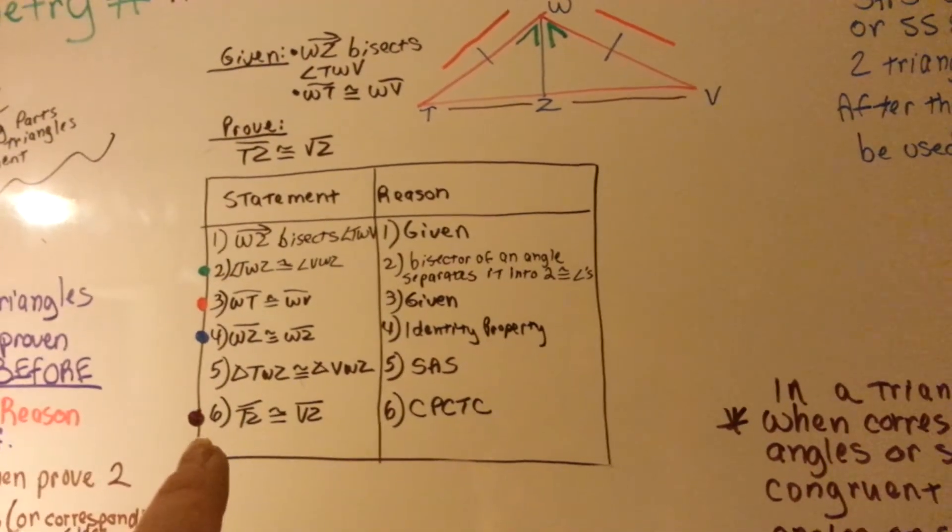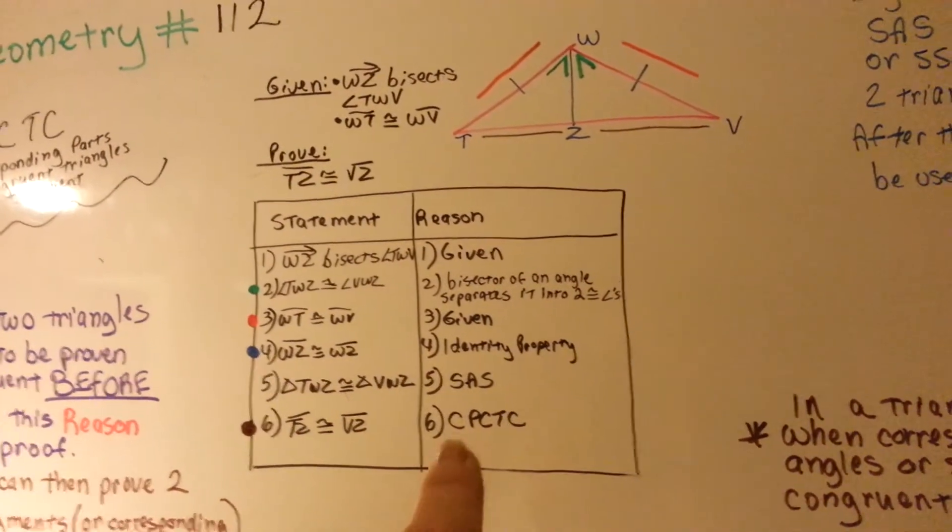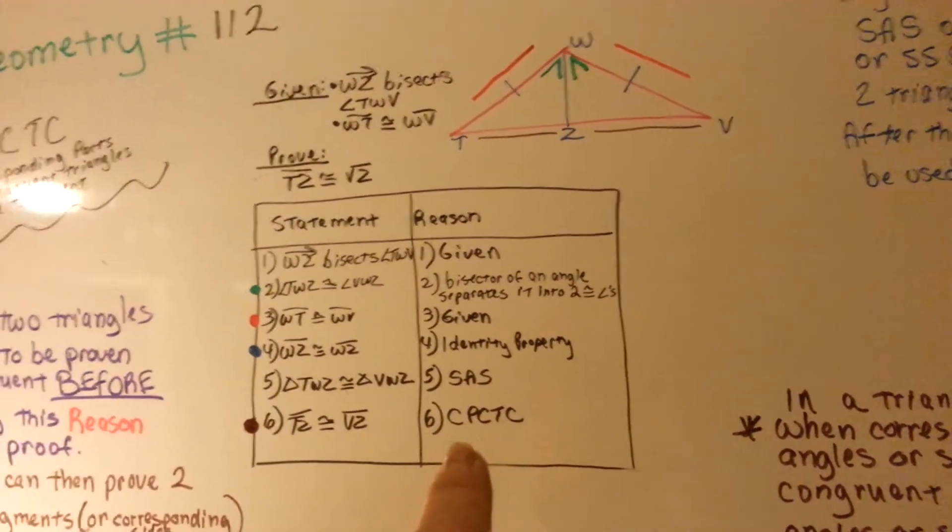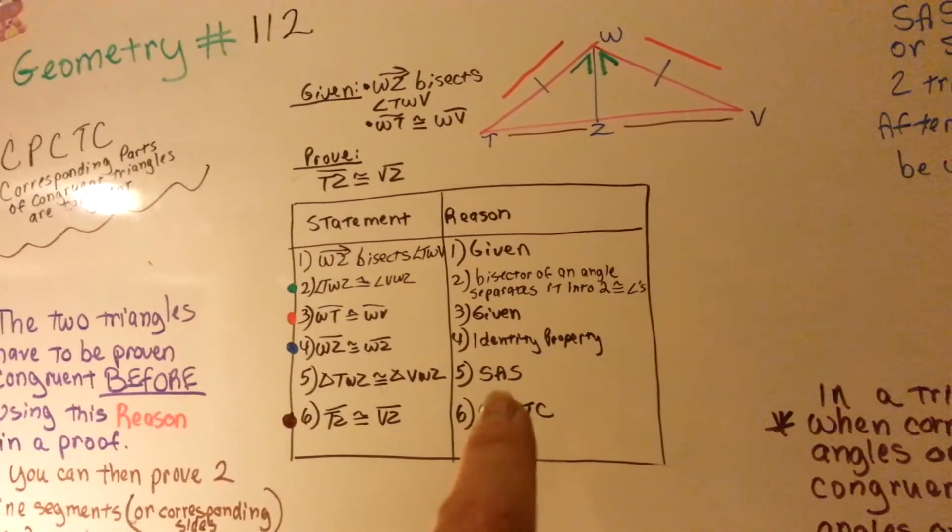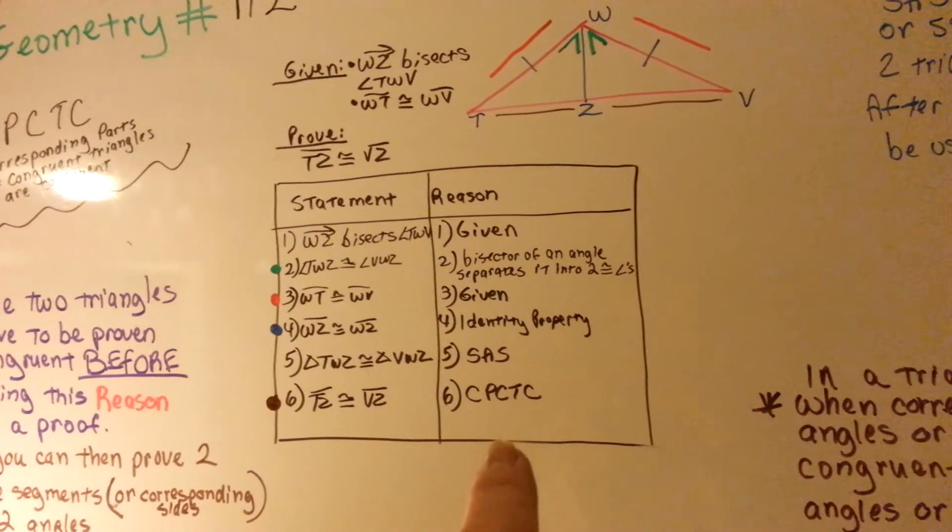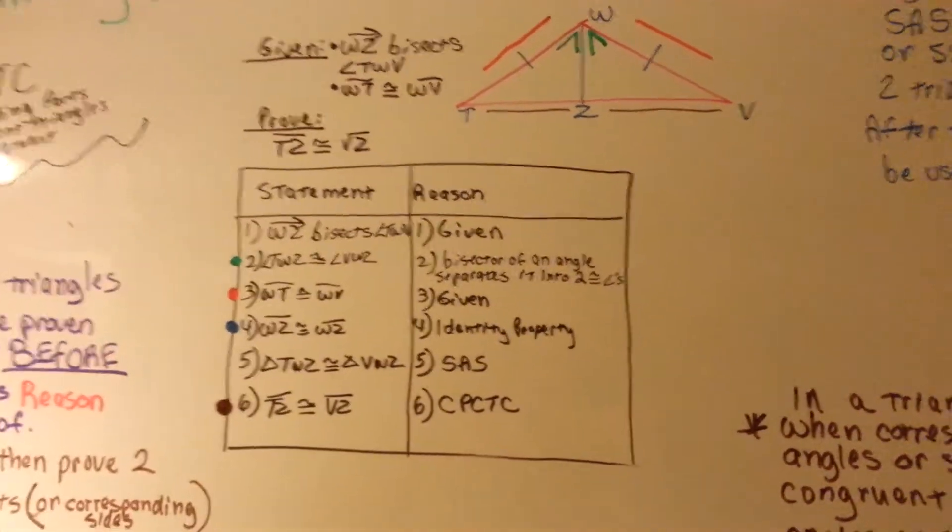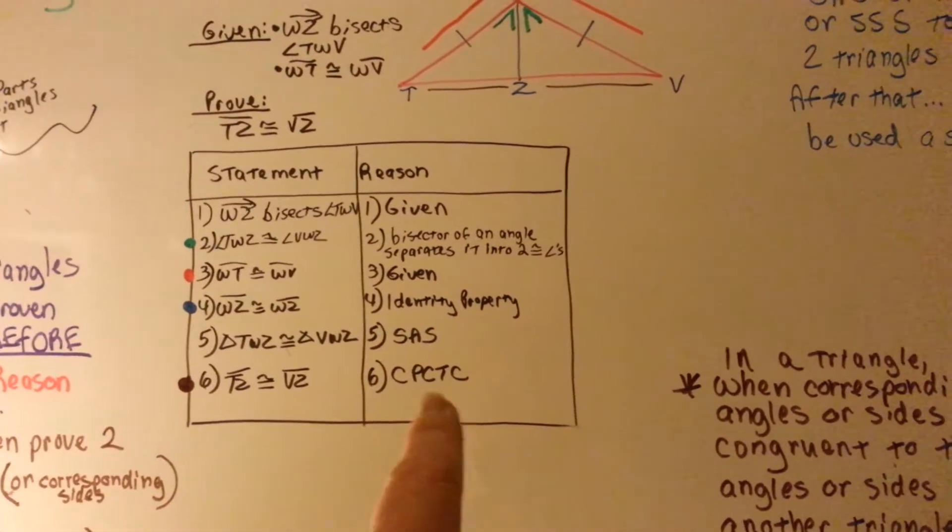So what ends up happening is, we needed to prove this, and we have, because of this, corresponding parts of congruent triangles are congruent. That's what CPCTC means.